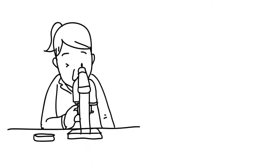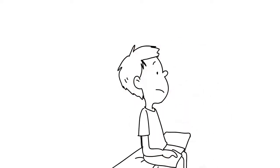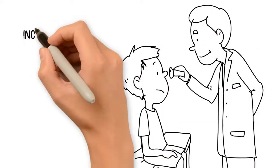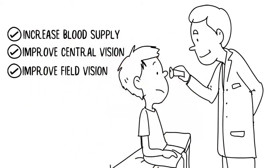Research indicates that RP patients' retinocoroidal vessel is smaller and the blood flow rate is slower than normal people. The surgery of vascular shunt is to increase blood supply to the eyes and improve the central vision and field vision of RP patients.